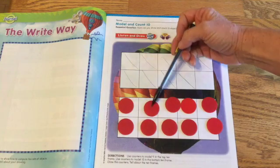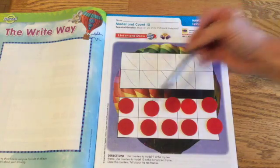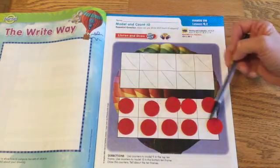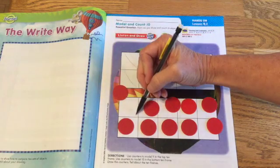Let's count. One, two, three, four, five, six, seven, eight, nine, ten. And I'm going to take my counters off.